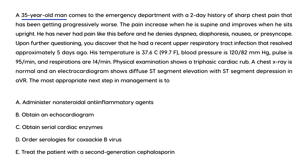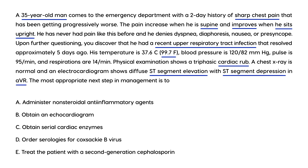Clinical vignette three: A 35-year-old man comes to the emergency department with a two-day history of sharp chest pain that has become progressively worse. Pain increases when he is supine and improves when he sits upright. He had a recent upper respiratory tract infection that resolved approximately five days ago. Temperature 99, blood pressure 120, pulse 95, respirations 14. Physical exam shows a triphasic cardiac rub. Chest x-ray is normal, and EKG shows diffuse ST segment elevation and ST segment depression in AVR. Again, another classic pericarditis vignette — the first-line treatment is NSAIDs, so the answer is choice A.